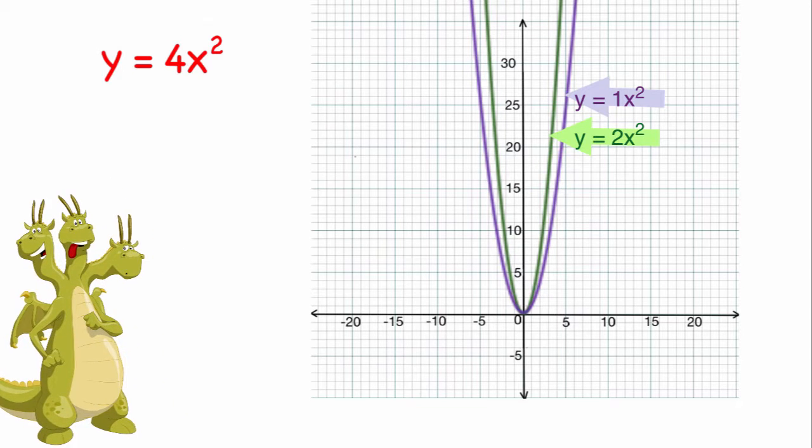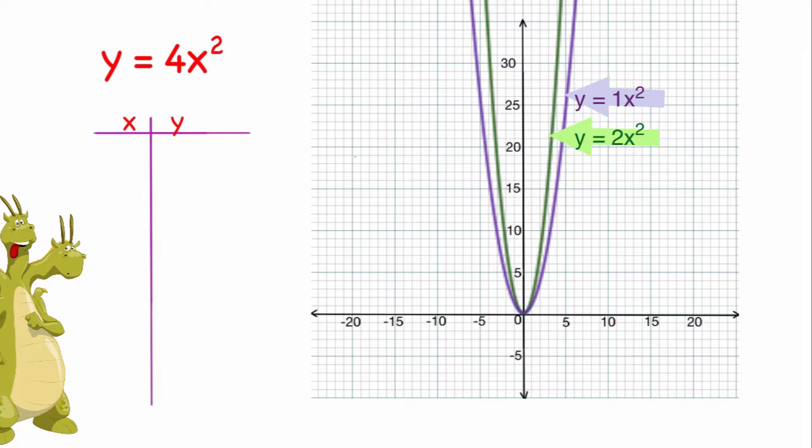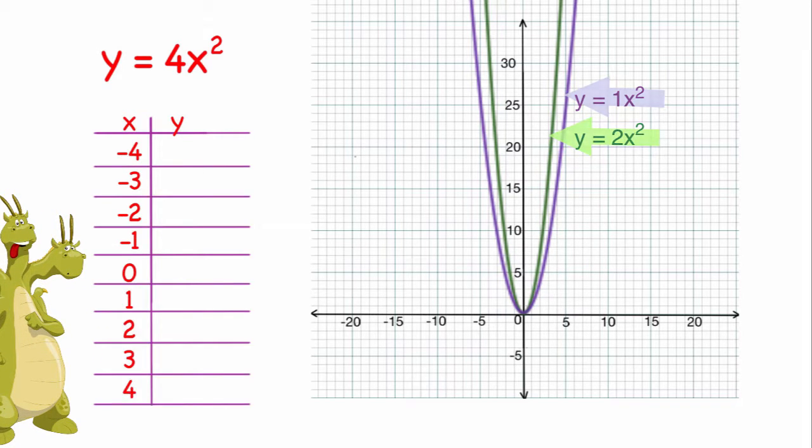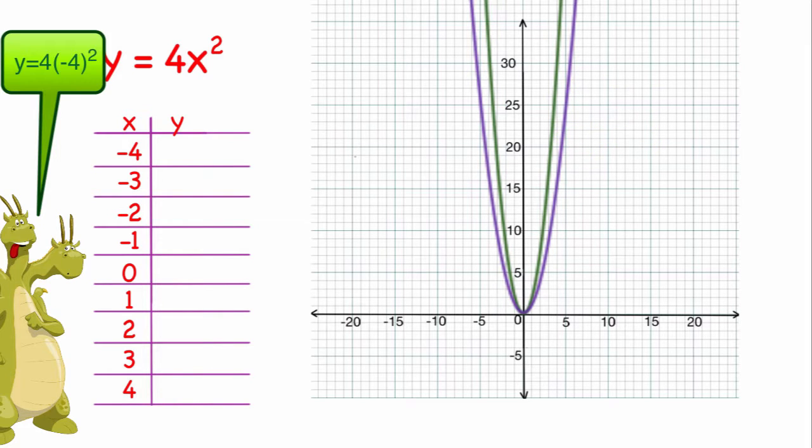So let's see. We'll keep the same x values, which will be from negative 4 to 4. And y equals 4 times negative 4 squared. Negative 4 squared is 16, 16 times 4 is 64. So my new coordinates are negative 4, 64.